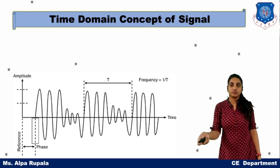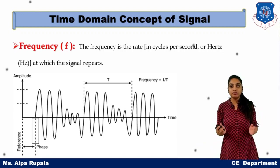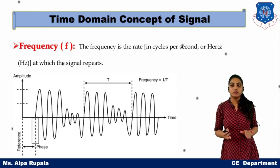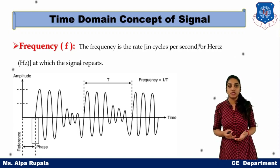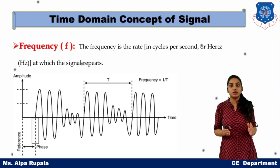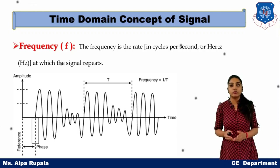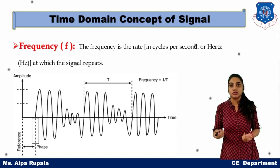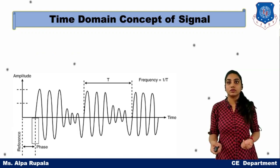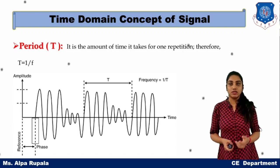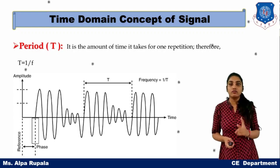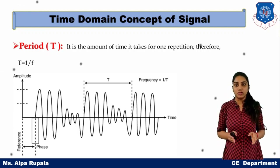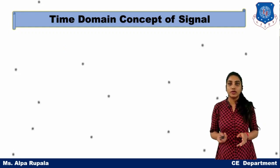The next definition is frequency. Frequency is how many times your signal repeats in a particular fixed interval of time. For example, if a signal repeats twice in one second, its frequency is 2. Related to frequency is period, represented as capital T — the amount of time taken by the signal for a single repetition. Frequency and time period are reciprocals of each other.